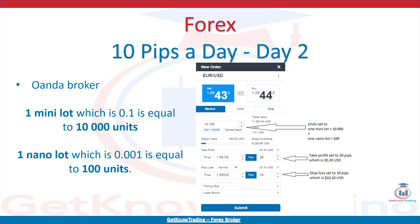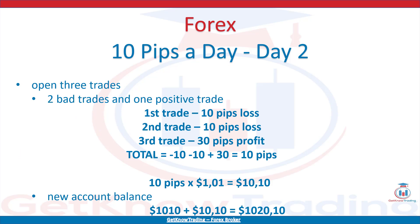OANDA uses terminology of units instead of lot size: 1 lot is 100,000 units, 1 mini lot (0.1) is 10,000 units, 1 nano lot (0.01) is 100 units. Opening 3 trades as on Day 1 - with 2 bad trades and 1 positive trade - first and second trade give 10 pips loss, third trade gives 30 pips profit, totaling 10 pips profit. With 10 pips multiplied by $1.01 per pip, I earned $10.10. Adding to Day 1 balance of $1,010 gives new account balance of $1,020.10.